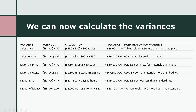For the labour rate variance: standard rate £20 minus actual rate £17, times the 16,340 actual hours worked, gives £49,020 favourable — we paid £3 per hour less than standard across all those hours. However, the efficiency variance was adverse: standard hours for 860 tables would be 12,900 hours, but they actually took 16,340 hours, times the standard rate of £20, gives an adverse variance of £68,800 — because workers took 3,440 hours more than standard.